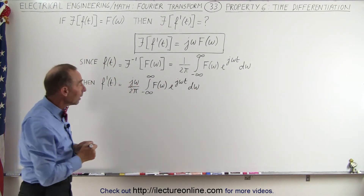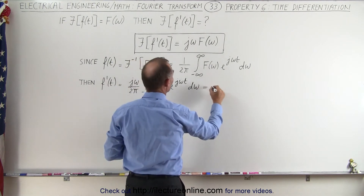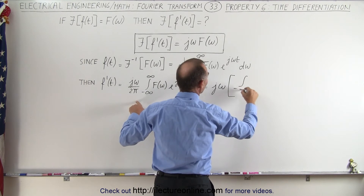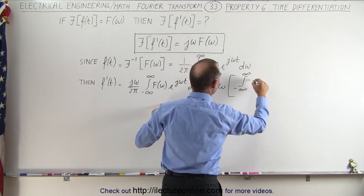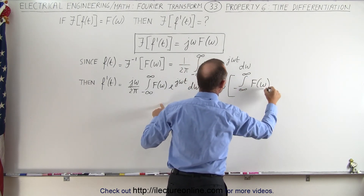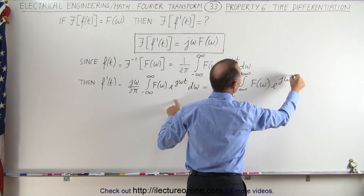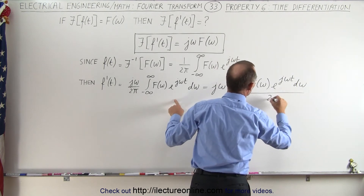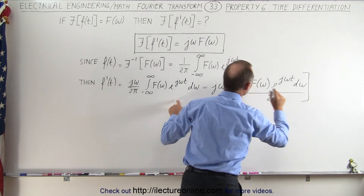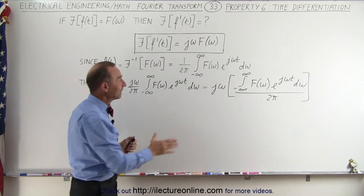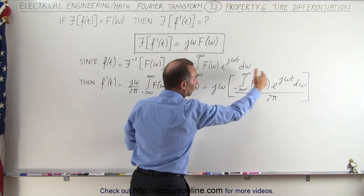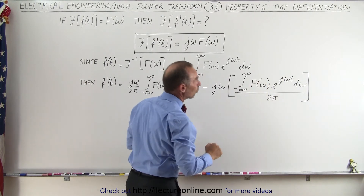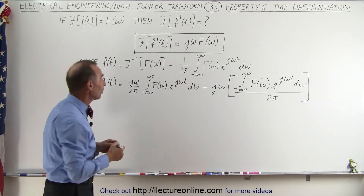When we rewrite that, we can say this is equal to j times omega times the integral from minus infinity to infinity of the function in the frequency domain times e to the j omega t d omega, divided by 2 pi. We've done that for a special reason, because what's inside the brackets represents the inverse Fourier transform of the function in the frequency domain.